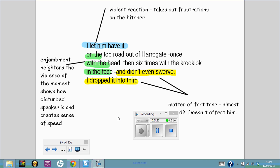The violent reaction from the narrator, who takes out his frustrations on the hitchhiker by hitting him in the face six times with a crook-lock of his car, suggests that this hitchhiker has really got to him.